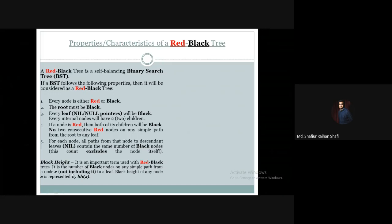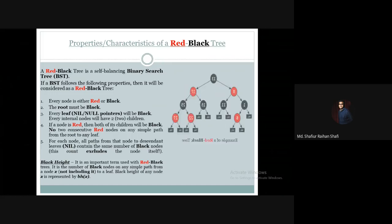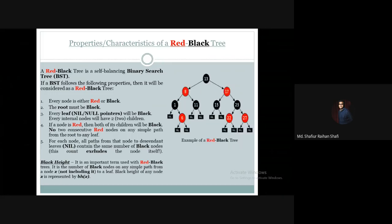We are not including the starting node itself — that is, we are excluding that node itself from the count. So I hope you have understood what black height is all about. Now let's take a look at an example of how a red-black tree looks.